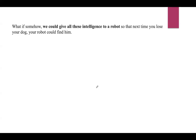What if somehow we could give all these intelligences to a robot? Earlier, the boy Lucas applied his intelligence in order to find his lost dog. If we give this intelligence to a robot, then next time, if Lucas loses his dog Rusty, with the help of this robot, he can easily find him. So this robot could find the dog.